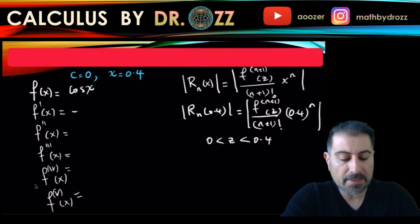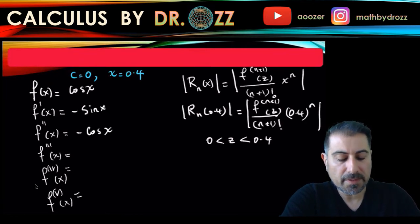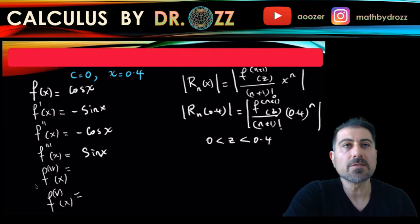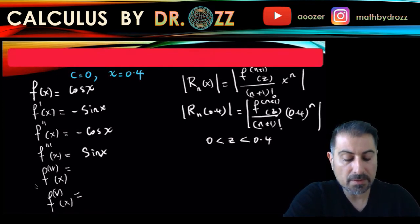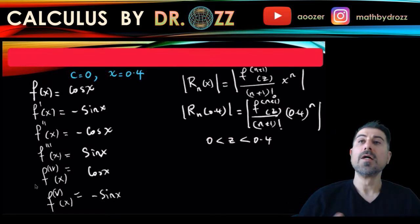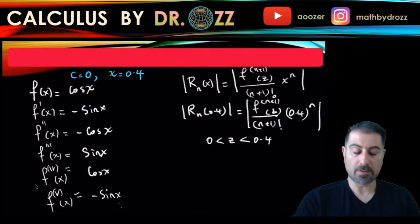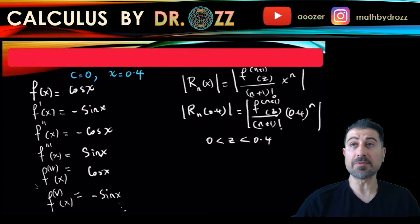And z is a number in between c and x, well, x is 0.4, so z is going to be a number in between 0 and 0.4. So the function that we're interested in, since we're trying to approximate cosine 0.4, it's going to be cosine x. So the prime of that is minus sine of x, minus cosine of x, and sine of x. So use the derivative formula card if you want to check the derivative of cosine and sine. Cosine x and minus sine x.